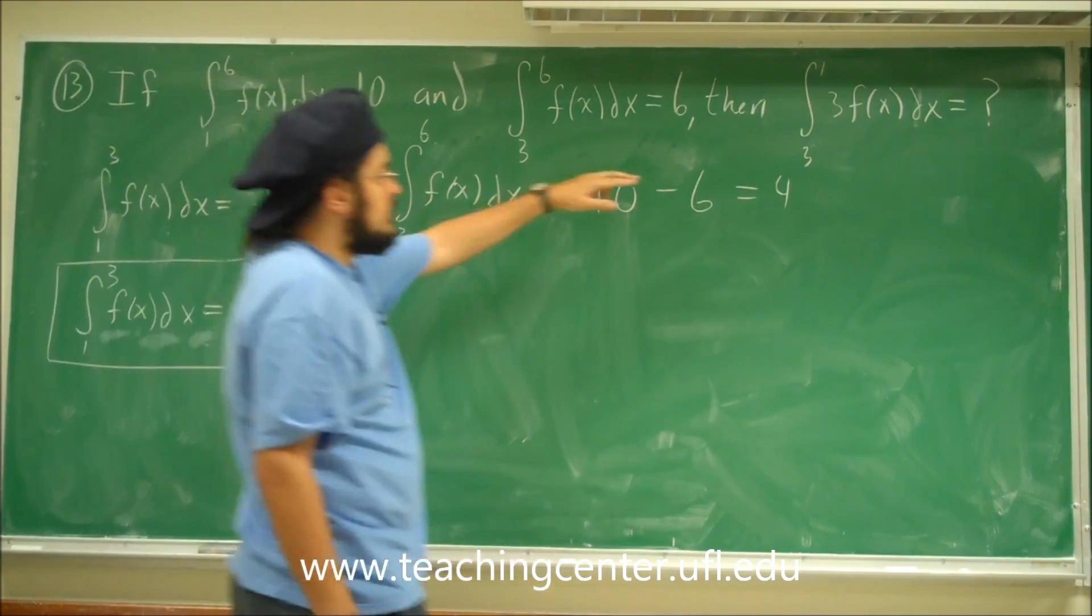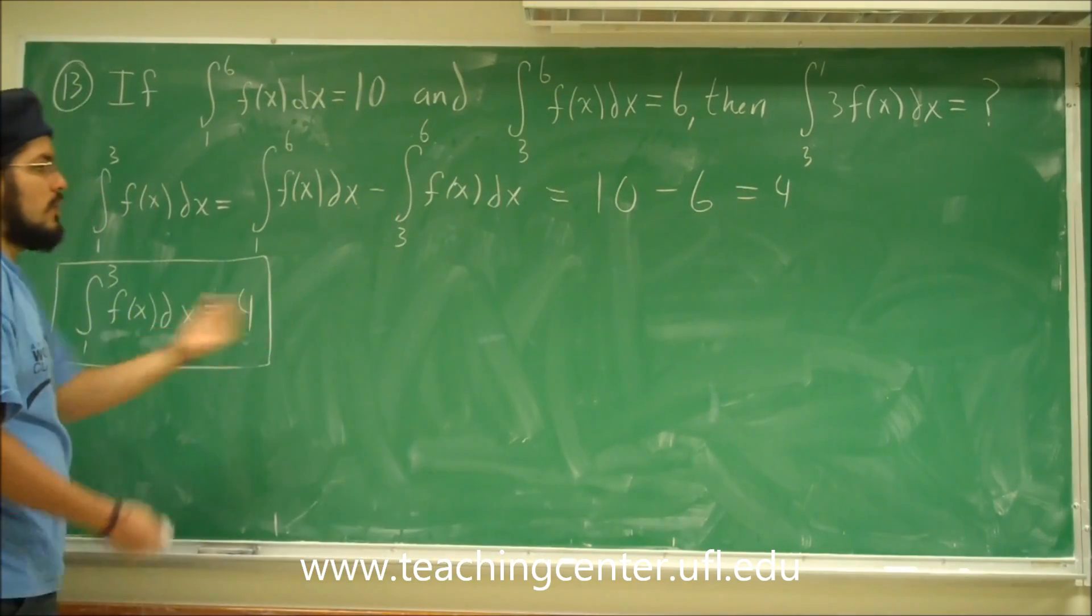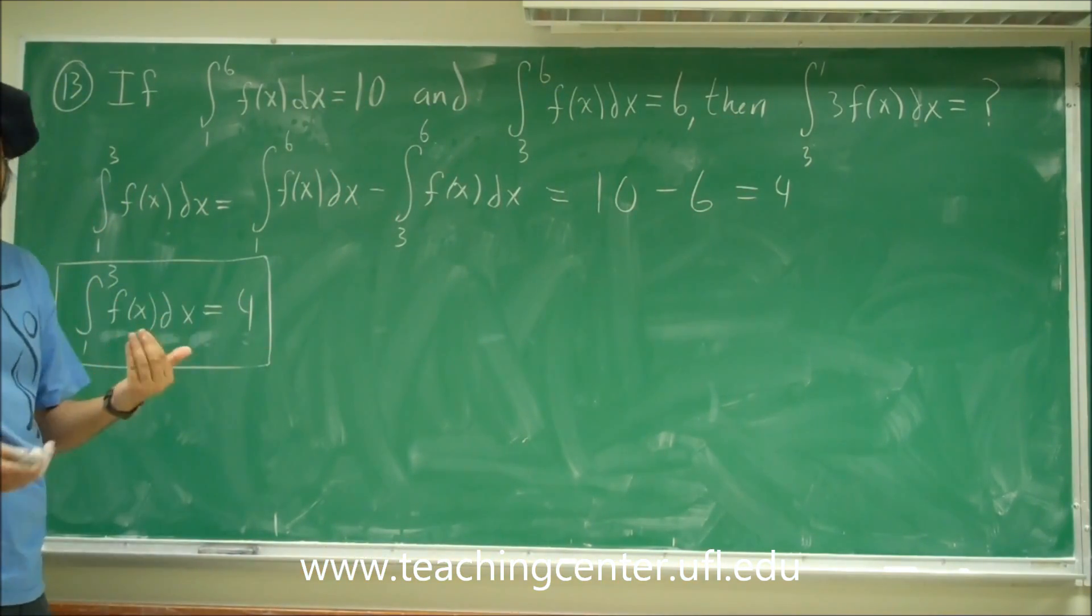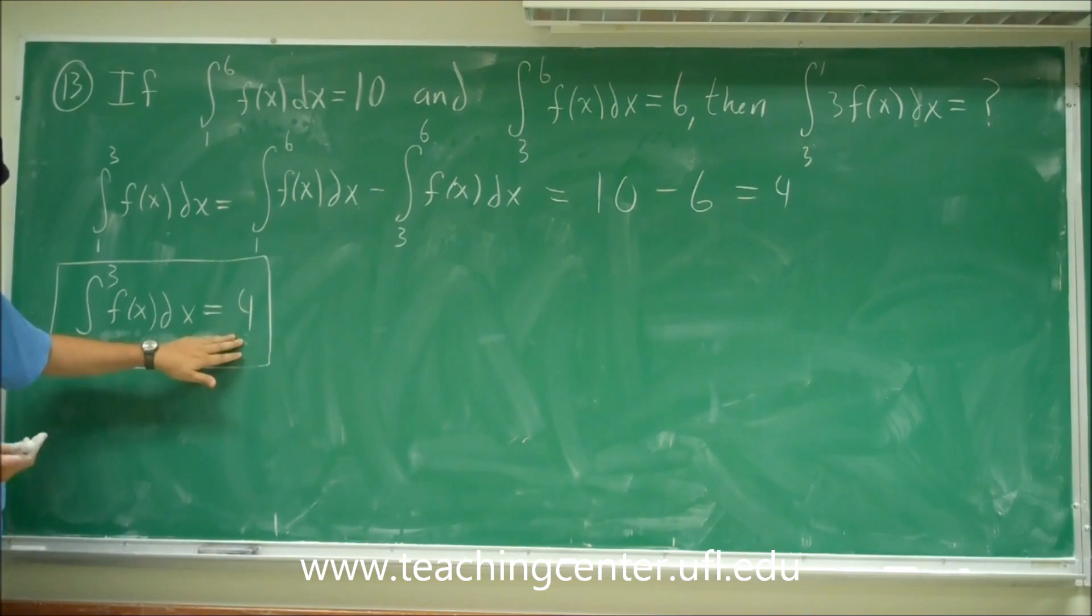We want to find, however, the integral from 3 to 1, so backwards. Instead of going forward, you're going to go backwards. Now, what happens if you go backwards is you're still going to have the same area but negative.